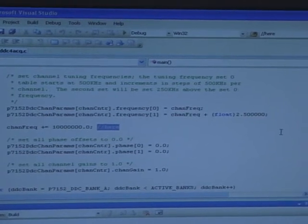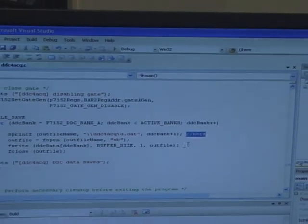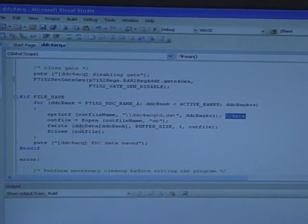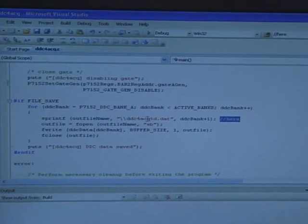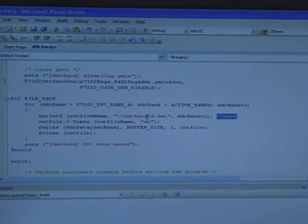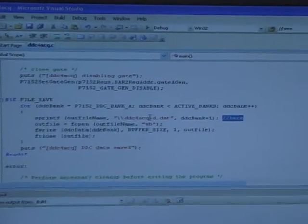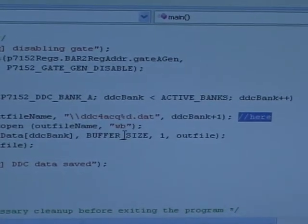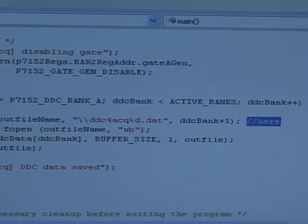The file, by the way, is named, and this is all part of the standard ReadyFlow package, DDC4ACQ. And depending on what bank it is, it would be 1, 2, 3, or 4. We have one active bank right now, so it will be DDC4ACQ1.